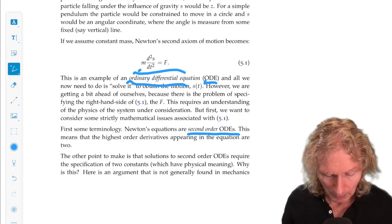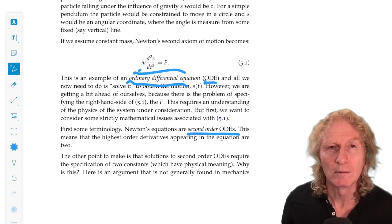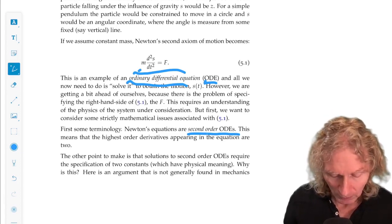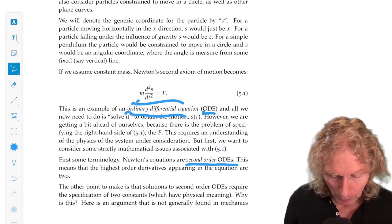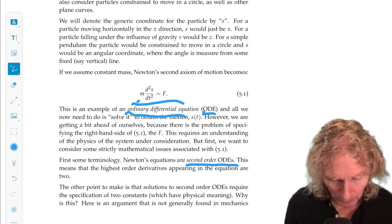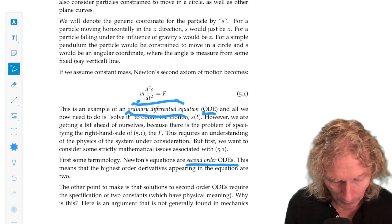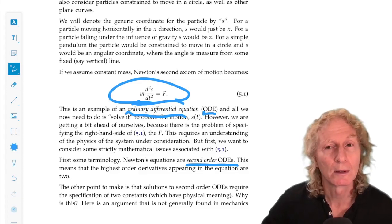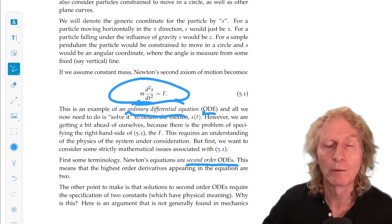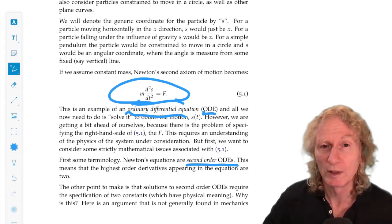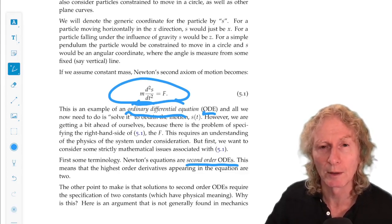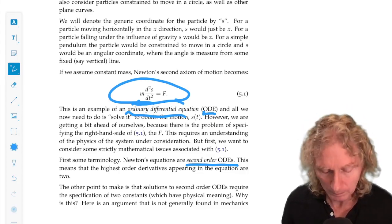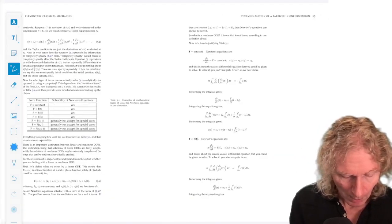All right, I want to give you a little bit of intuition about why this is the case. So keep in mind first that Newton's equations gives us the second derivative of the motion. And if we want to compute the third derivative, the fourth derivative, the fifth derivative, and so on, we just keep differentiating this with respect to time over and over and over.